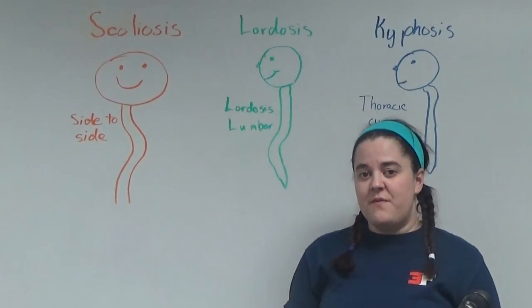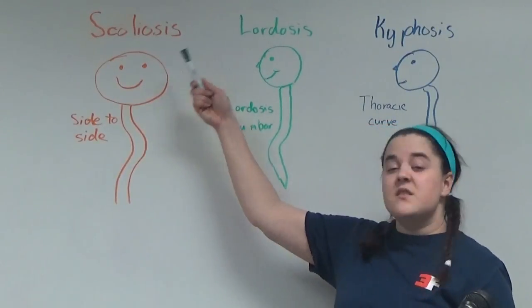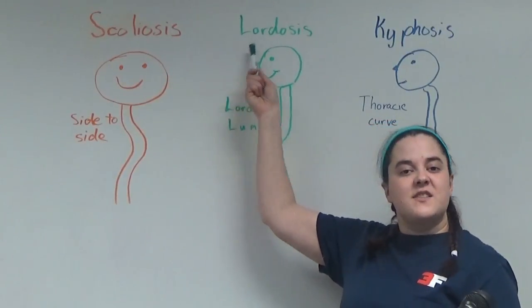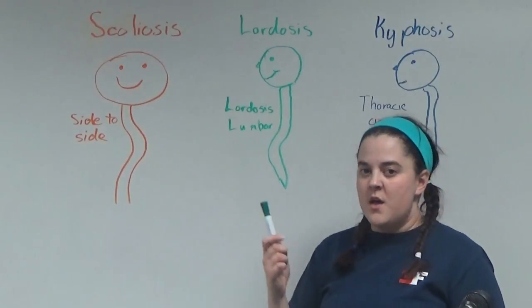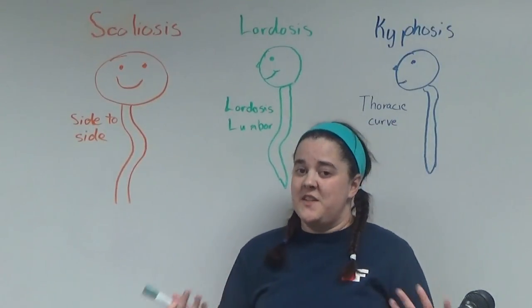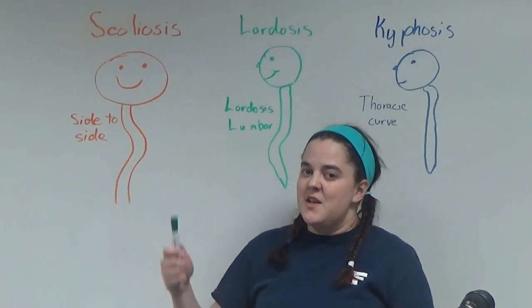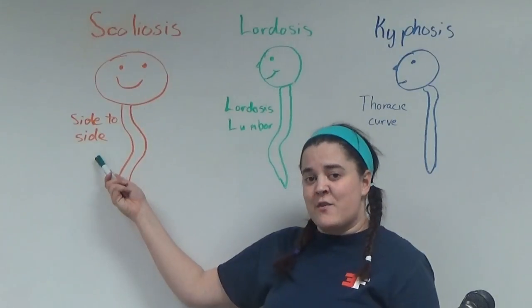Let's talk briefly about scoliosis, lordosis, and kyphosis. They're all different curvatures of the spine. Scoliosis is a side-to-side curvature.